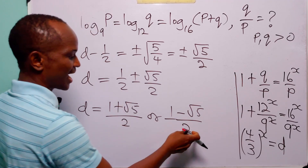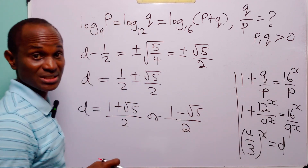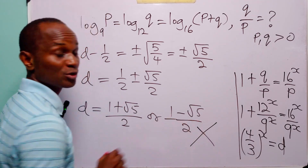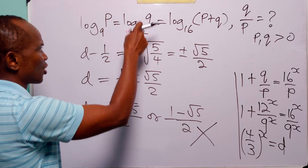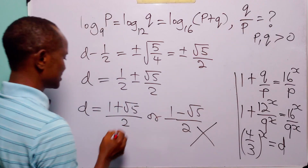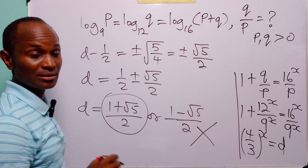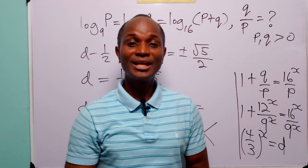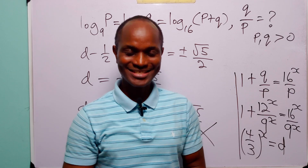The first value is positive and the second is negative. Remember that P and Q are both positive, so Q over P cannot be negative — that value is not acceptable. Therefore, Q over P equals 1 plus root 5 over 2, which is actually the golden ratio. And with that, we come to the end of today's tutorial. I hope you learned something new. If you enjoy such content, please subscribe to the channel, leave a like to support the channel. Thanks for watching and see you in the next video. Bye.